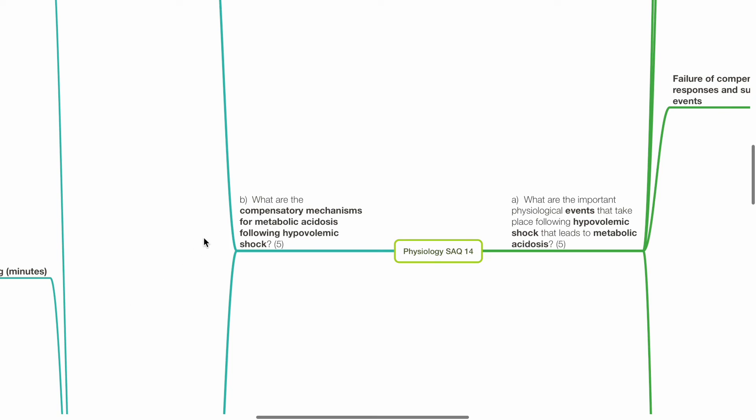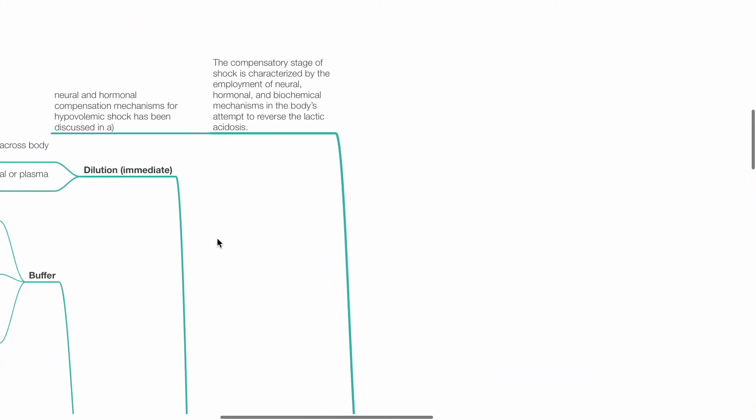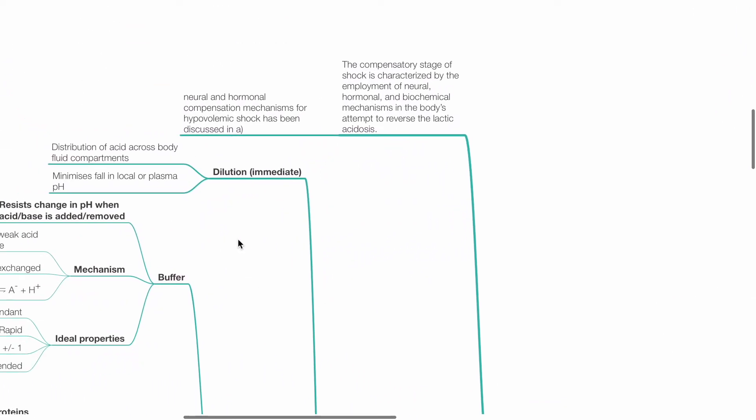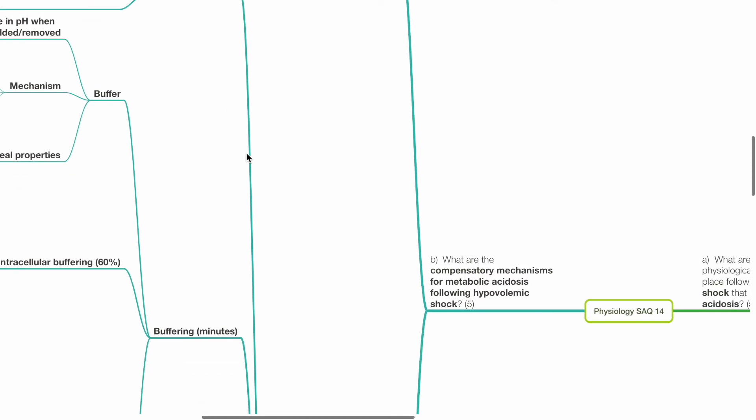Part B: What are the compensatory mechanisms for metabolic acidosis following hypovolemic shock? The compensatory stage of shock is characterized by employment of neural, hormonal and biochemical mechanisms in the body's attempt to reverse lactic acidosis. Neural and hormonal compensation for hypovolemic shock has been discussed in part A.